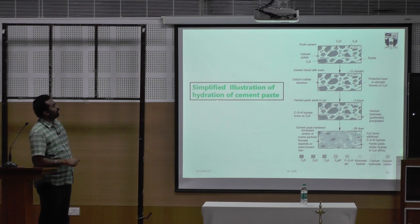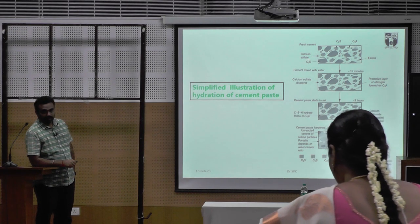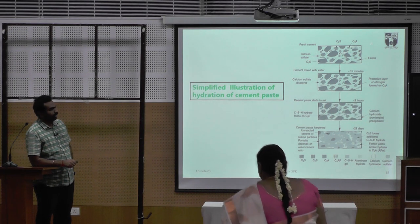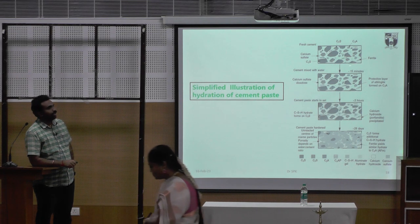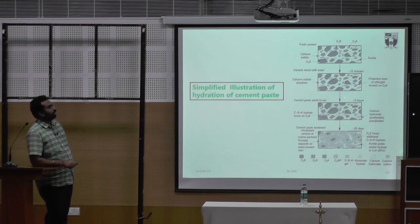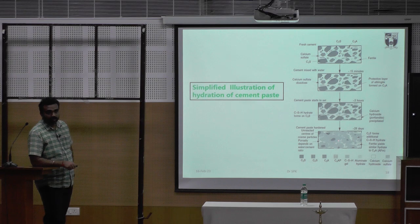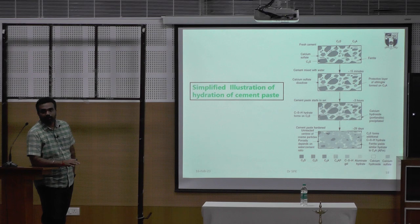This is a simplified illustration of the hydration of the cement process. The four materials in fresh cement are mixed with water. After about 15 minutes, a protective layer called ettringite is formed on the aluminate. After three hours, the picture changes — there is a formation of CSH gel hydrate. After 28 days, there will be a change in the whole structure.